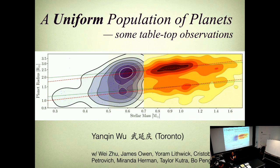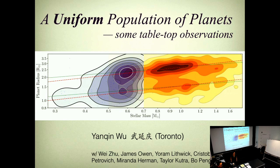Yanqin's research interests are really wide. They cover a wide range of topics, all related to planets, including the interiors of Jovian planets, planets in binary systems, circumstellar debris disks, vortices, the Pluto-Charon system, and the primordial Kuiper belt. But today we're going to learn about the uniform population of super-Earths. So please join me in welcoming Yanqin.